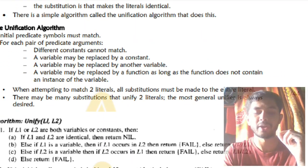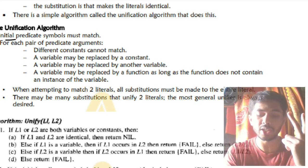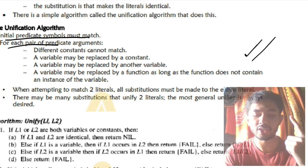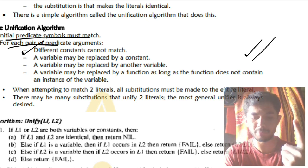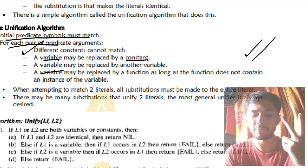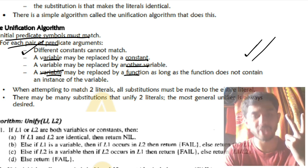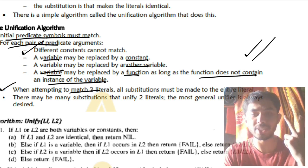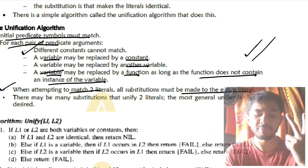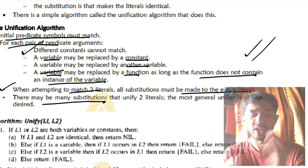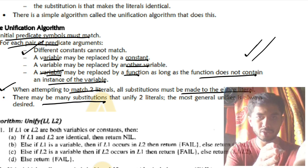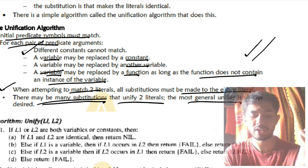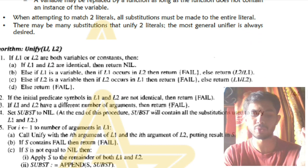The unification algorithm finds a set of substitutions that can be made for the given dependencies. The algorithm has key rules: initial predicate symbols must match; different constants cannot match; a variable can be replaced by a constant, by another variable, or by a function — but it should not have an instance of the same variable. After matching two literals, all substitutions must be applied to the whole literal.